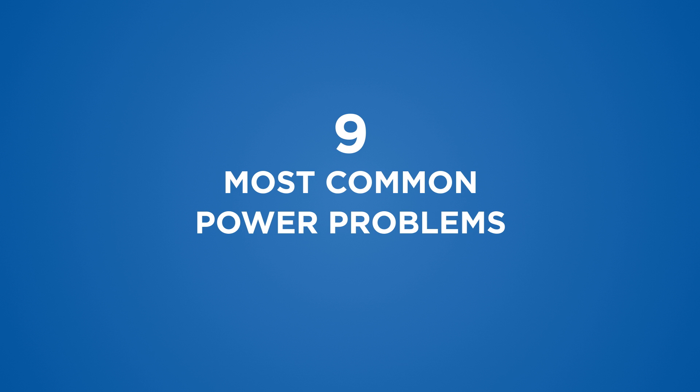What would you do if the power in your facility went out? In this video, I'll demonstrate how a UPS, or uninterruptible power supply, can help protect your electronic equipment from the nine most common power problems. A UPS is specifically designed to safeguard many different types of electronic equipment, ranging from small desktop computers to larger network servers, and from healthcare to telecommunication markets.